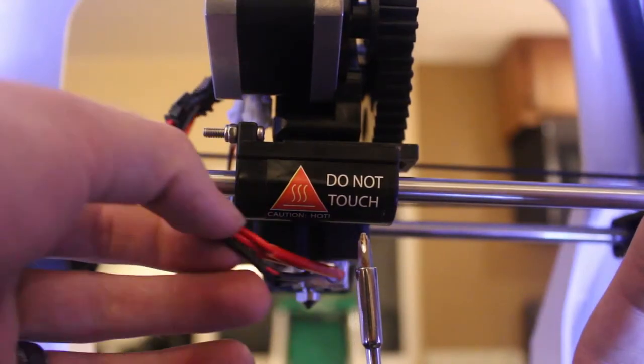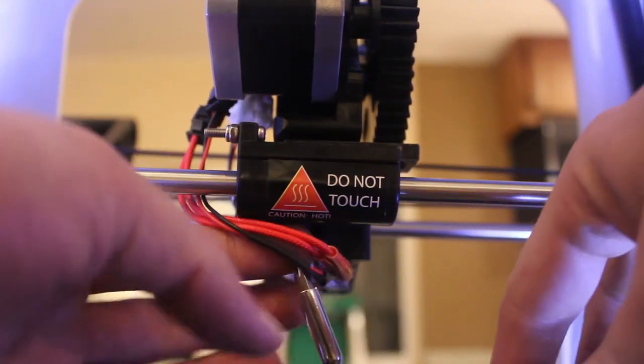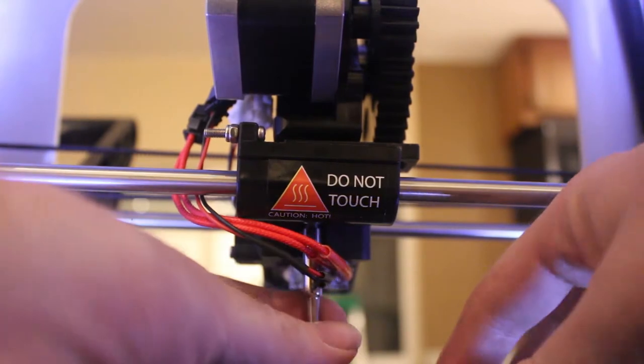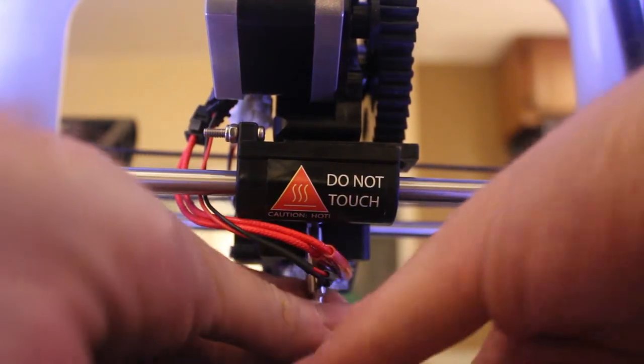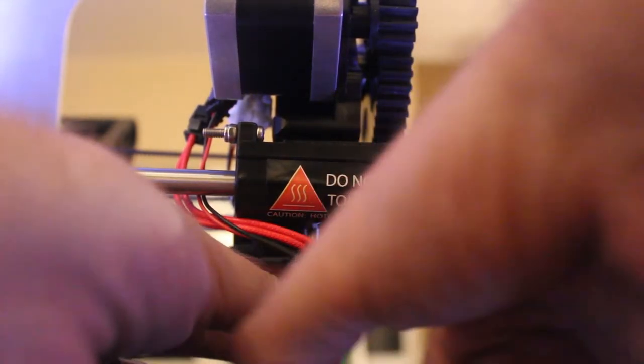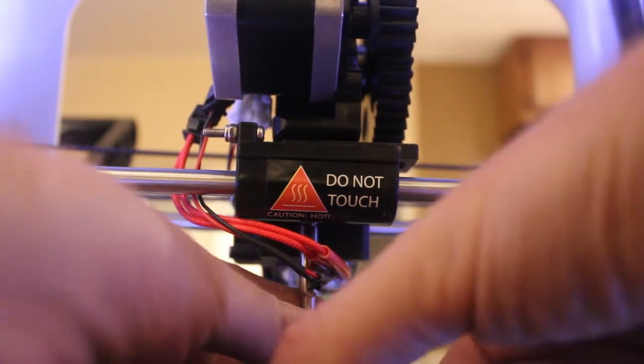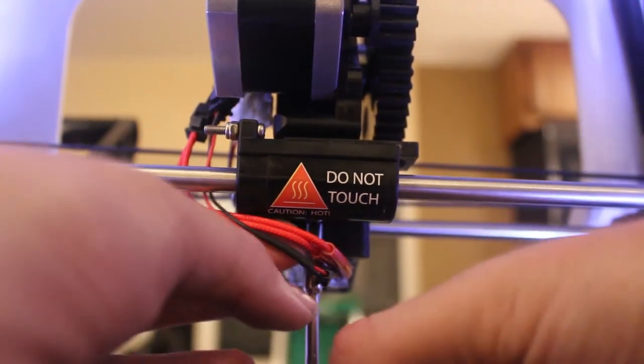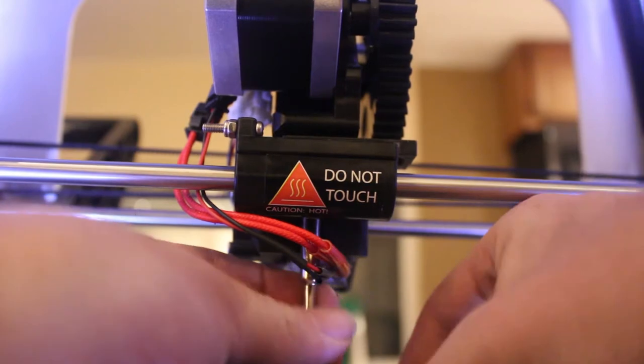Once we've got that all clipped into place, we're going to want to move these wires, kind of just make sure that they're away from the heater block so that they don't melt when you're printing. And then go ahead and tighten down that Phillips head screw that we loosened earlier. Once that is done, you should be good to continue printing.